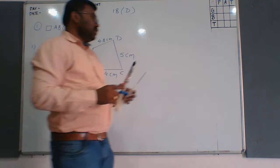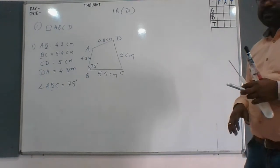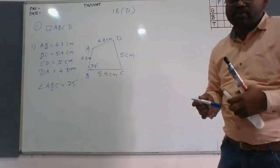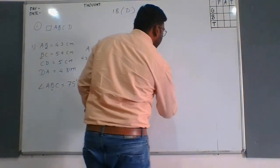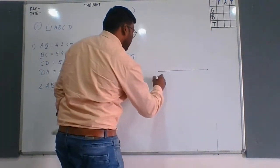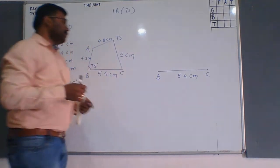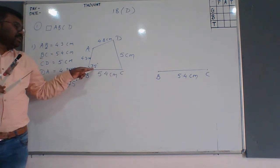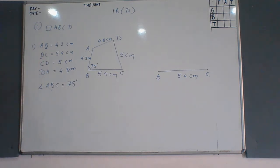Now let us convert the rough diagram to the actual diagram. First, draw the segment BC of 5.4 cm. Then we need to construct angle B of 75 degrees. To construct the 75-degree angle, we already know how to draw basic angles from previous exercises. As we know, 75 degrees is between 60 and 90 degrees.